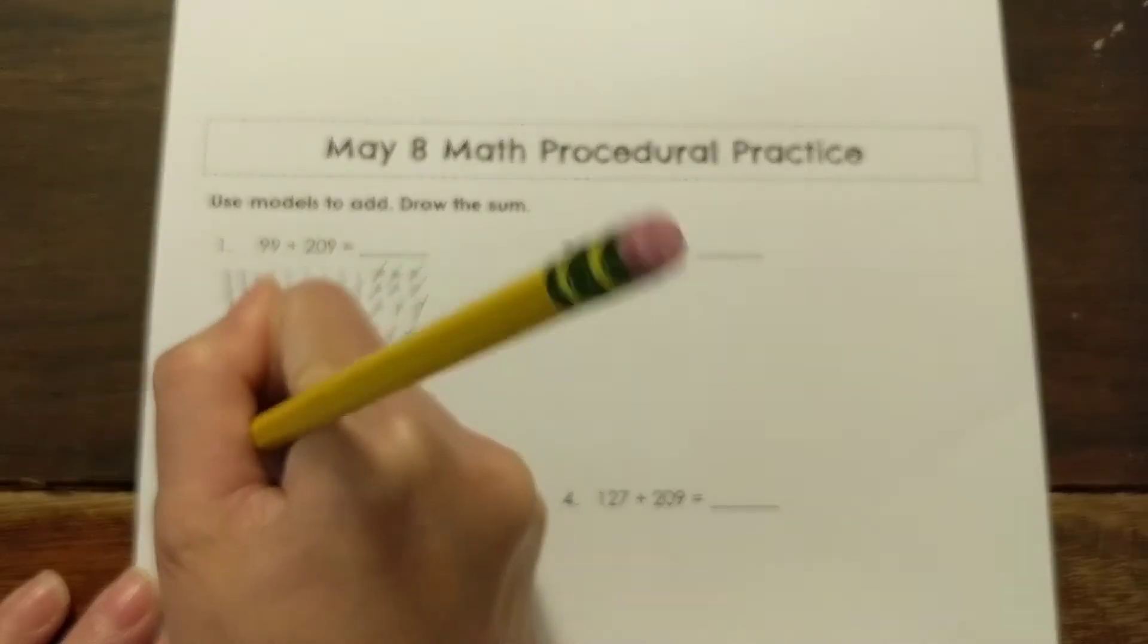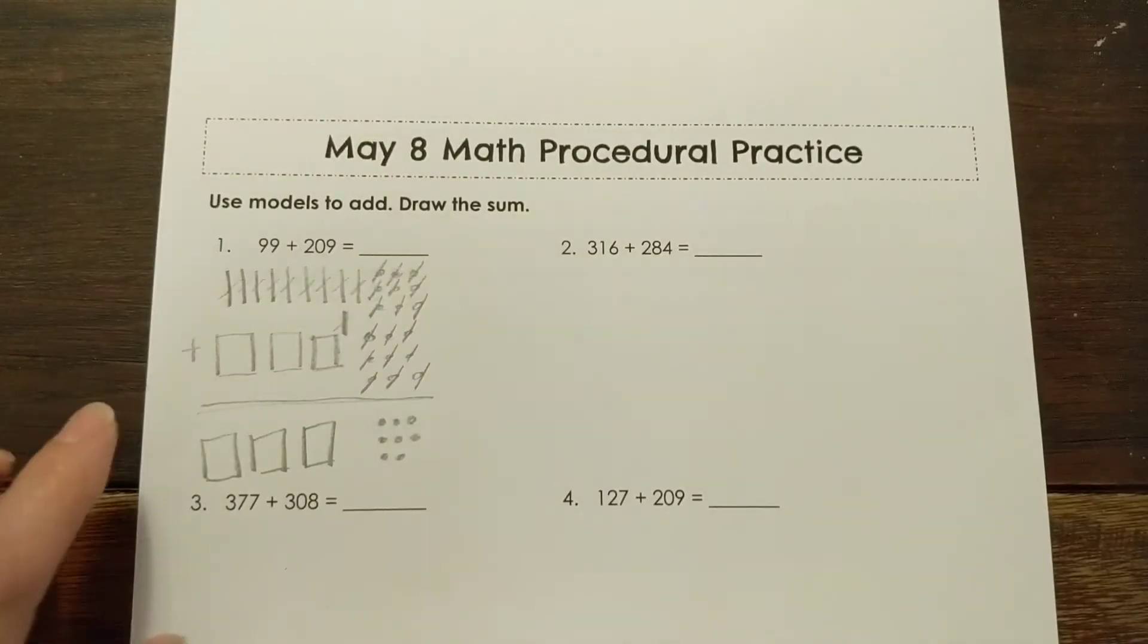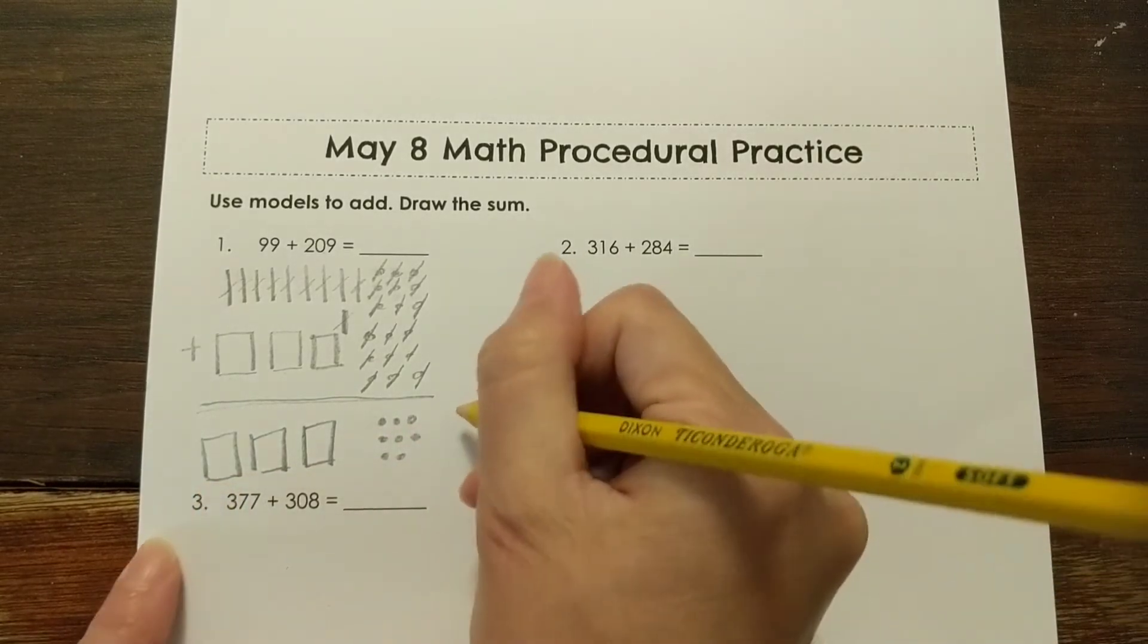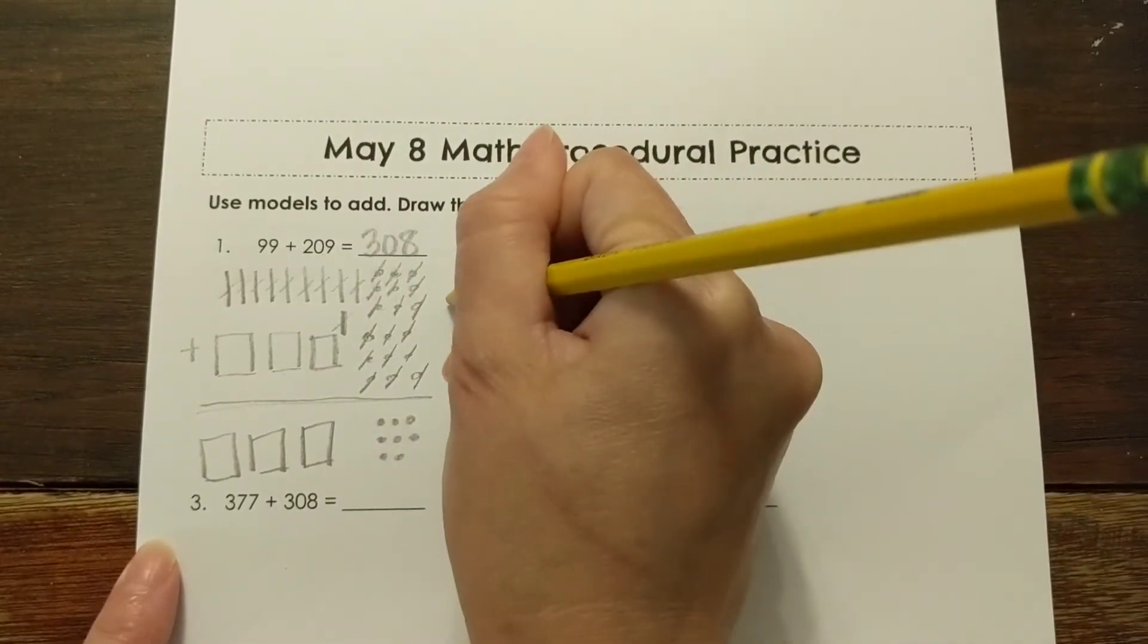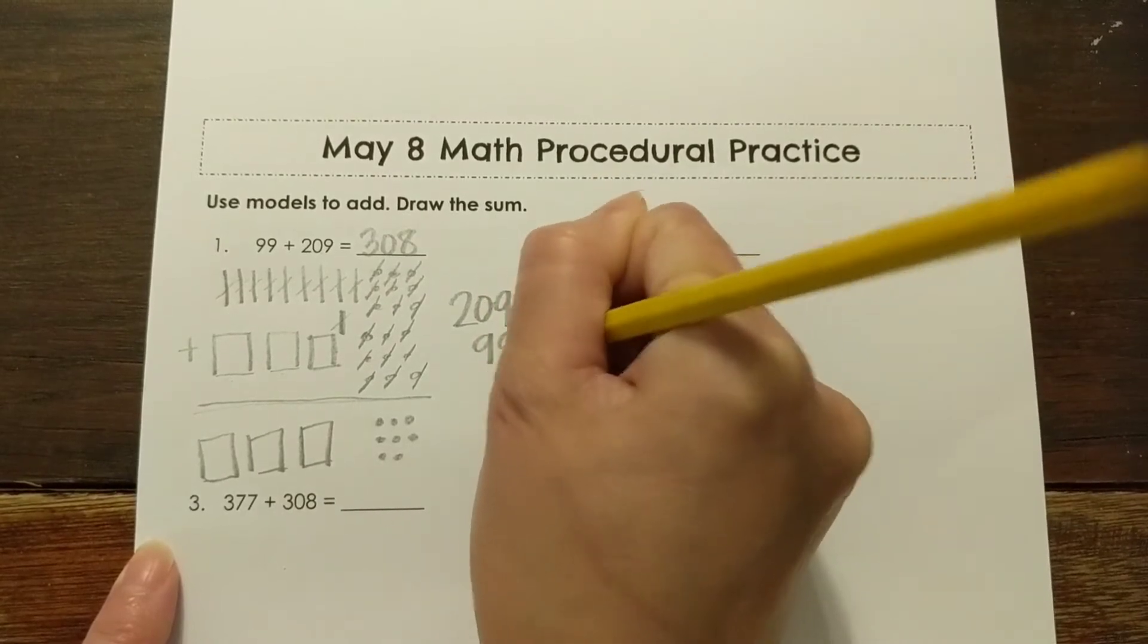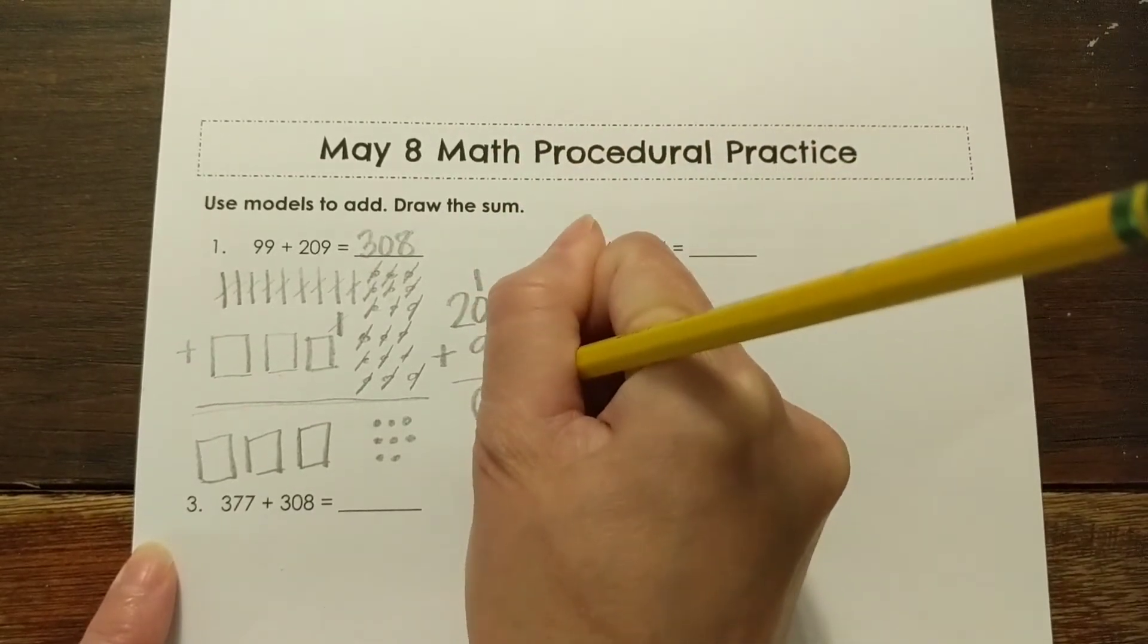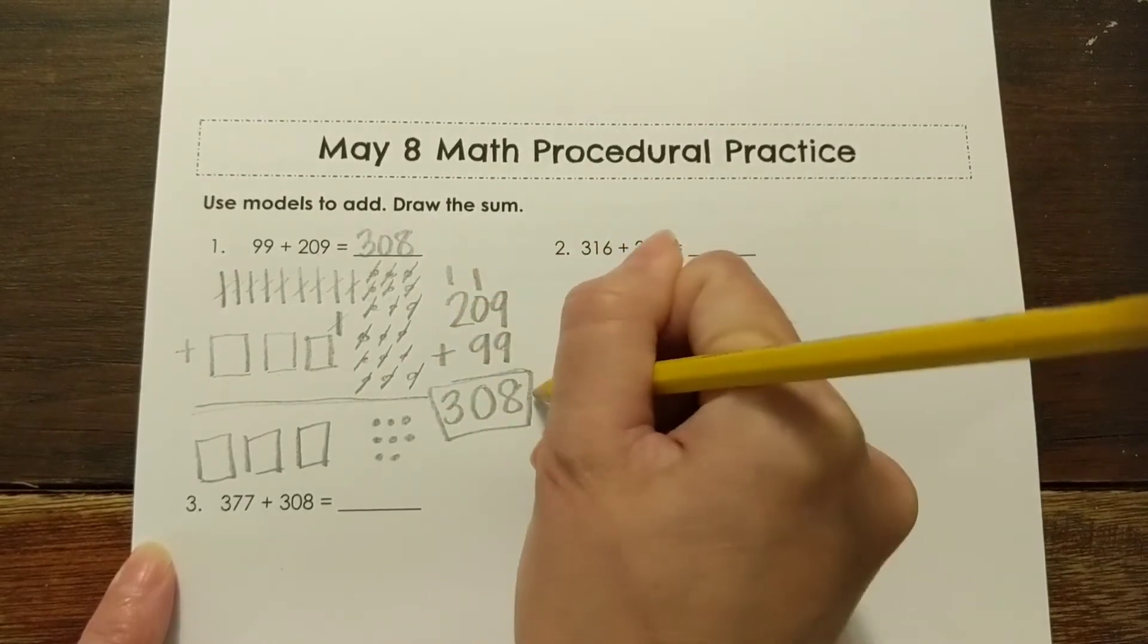And honestly, looking at this again, I probably would have put the 209 in the front. But it's okay. Either way, it's fine. So what I have left here is 308. So let's check our work by using an algorithm. I'm going to put the 209 on the top and the 99 on the bottom. 9 plus 9 is 18, carry my 1. 9 plus 1 is 10, 0, carry my 1, 308. So that checks out.